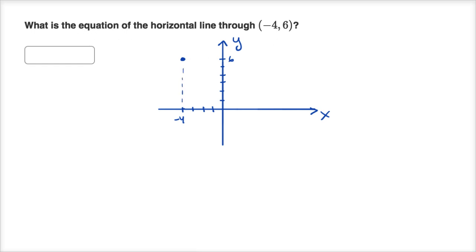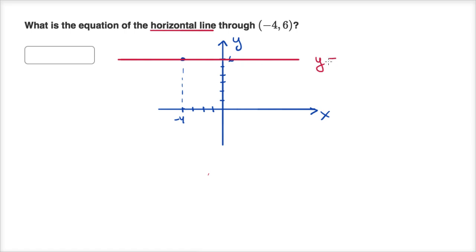And they're saying, what is the equation of the horizontal line? It is a horizontal line, so it's just going to go straight left-right like this. That is what the line would actually look like. Well, for any x, y is going to be equal to six. This is the equation y equals six. It doesn't matter what x you input — you're going to get y equals six. It just stays constant right over there.